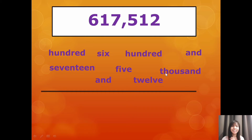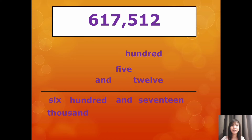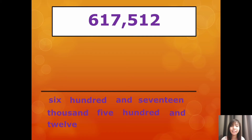So, let's start. What number comes first? Six, hundred, and, seventeen, thousand, five, hundred, and, twelve. Let's read the number in words: six hundred and seventeen thousand, five hundred and twelve.